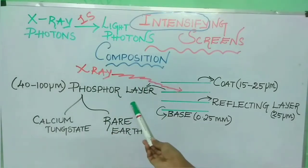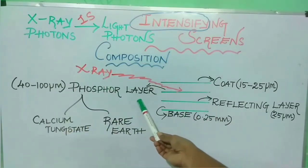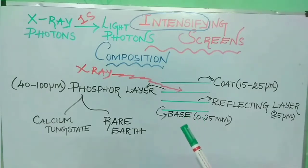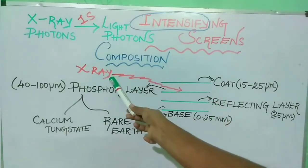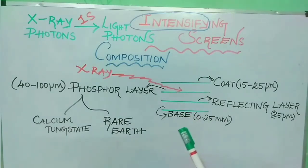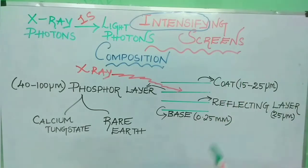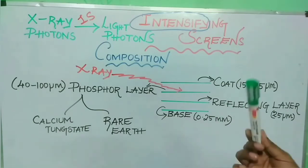Next is phosphor layer. The thickness of phosphor layer is about 40 to 200 micrometers. This phosphor layer comprises phosphor crystals which are suspended in a plastic material. When the phosphor crystals are struck by incoming x-ray photons, these crystals absorb the x-ray energy and re-emit this energy as visible light photons. Even a single x-ray photon absorbed in an intensifying screen generates many light photons, leading to increased film exposure.